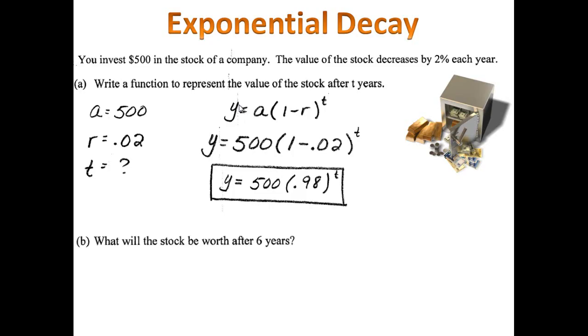Now, they want to know what the value of the stock would be worth after 6 years, assuming that it continues to decline in value by 2% a year. In that case, we simply plug the 6 years in for t. And that tells us the value of our stock will be worth around $442.92.